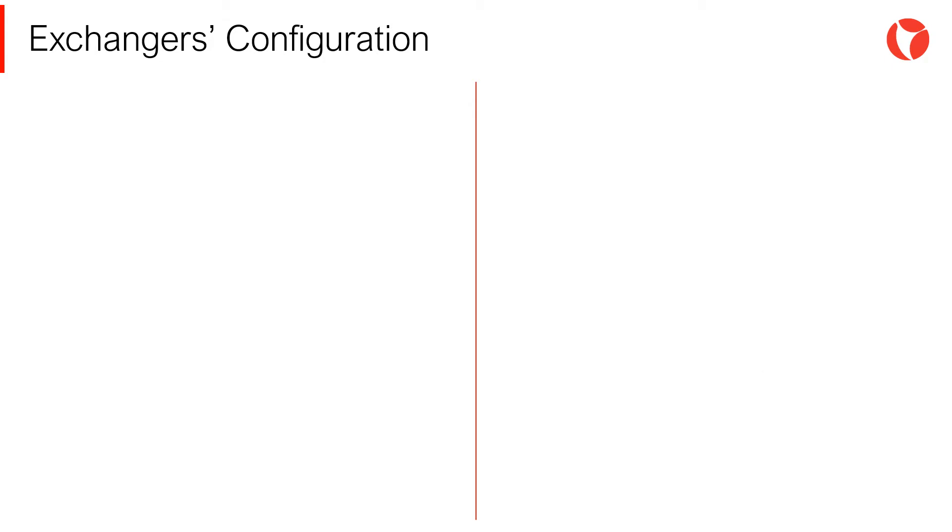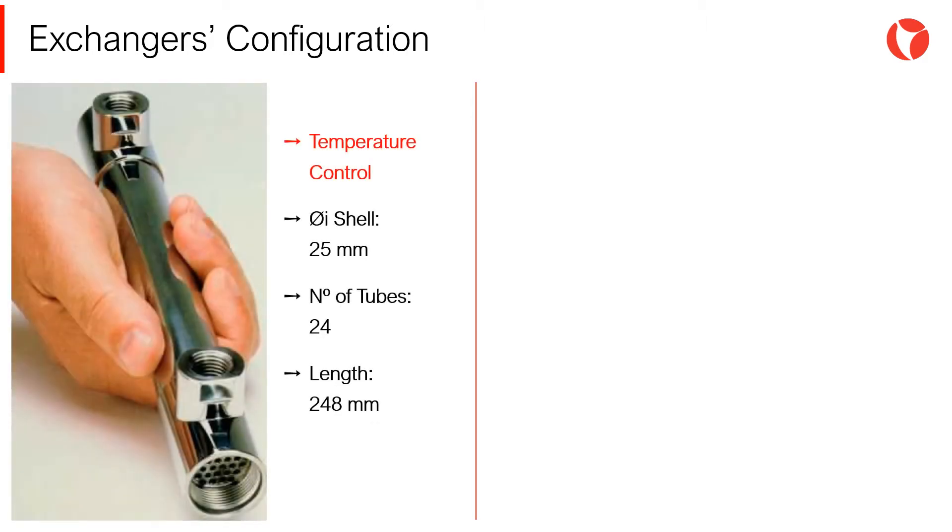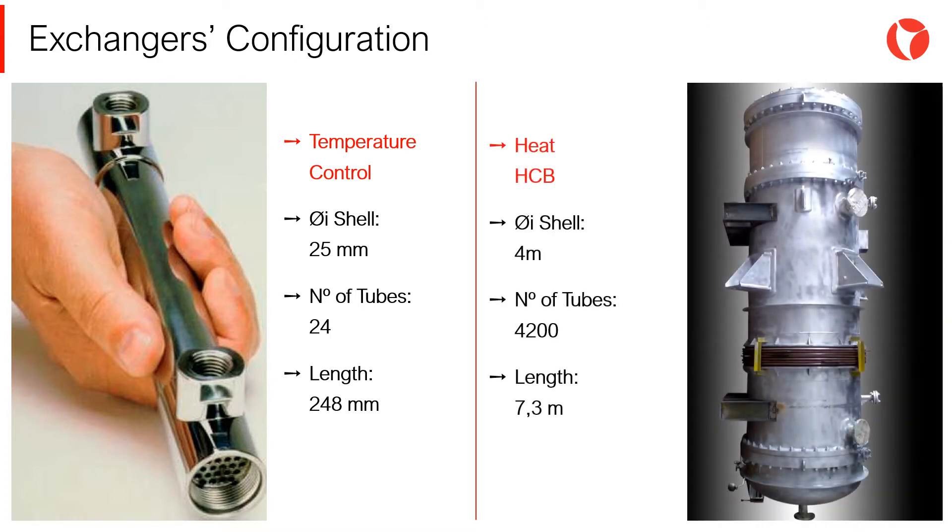Shell and tube heat exchangers are used in a large number of applications. For example, we can go from very small exchangers for temperature control, in this case 25 mm diameter and 24 tubes, and we can go up to very large applications for hydrocarbon heating, for example, 4 meters diameter and 4200 tubes.